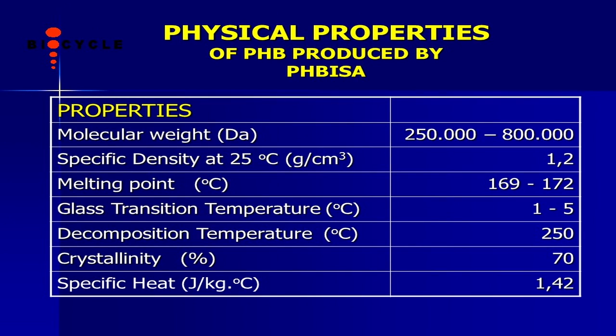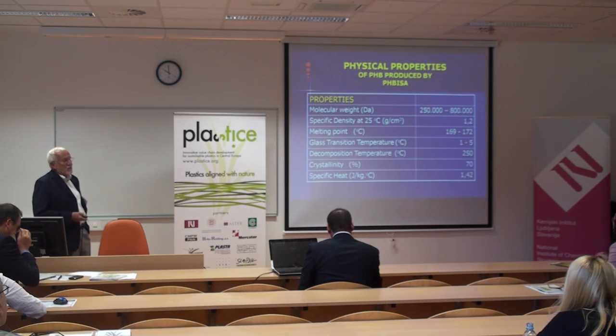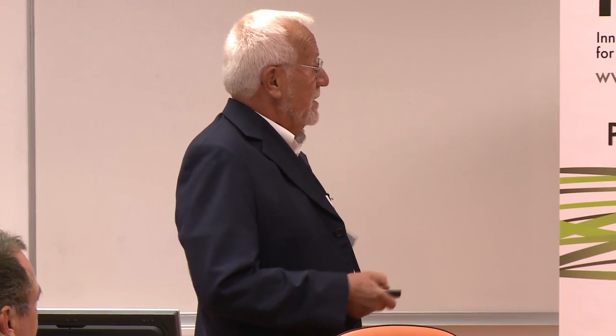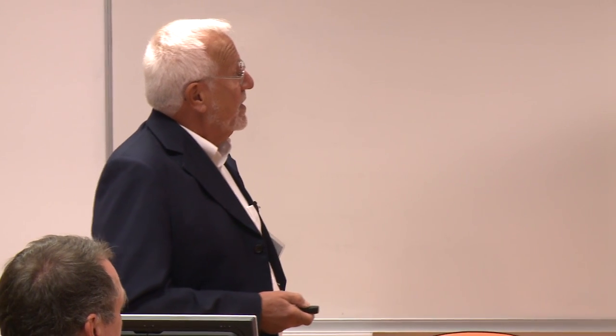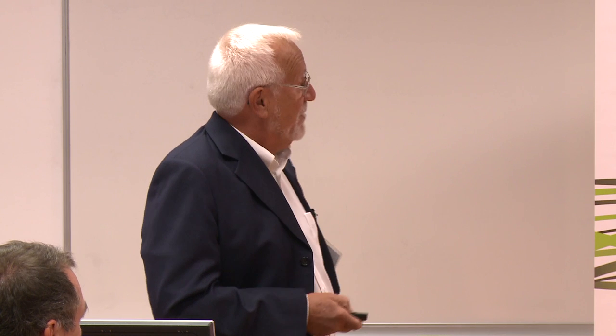The physical properties of the Brazilian product: molecular weight between 250,000 and 800,000; density normal for polyester; melting point around 170°C. The decomposition temperature is close to processing temperature, which requires care. The material is highly crystalline. The thermo-mechanical properties show it is a brittle material — elongation to break only 9%. Crystallinity is about 51%, but on storage for a month or longer, crystallinity increases to near 90%, causing further problems.